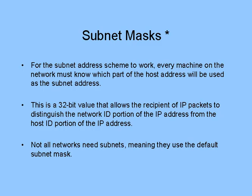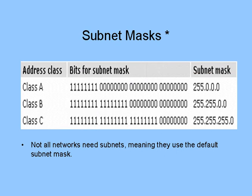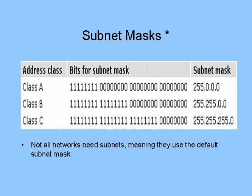For the subnet address scheme to work, every machine on the network must know which part of the host address will be used as the subnet address. This is a 32-bit value that allows the recipient of IP packets to distinguish the network ID portion of the IP address from the host ID portion. Not all networks even need to have subnets — I can basically get by with the default subnet mask if I fall within certain ranges.